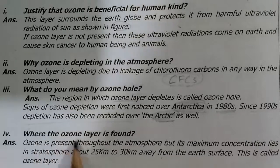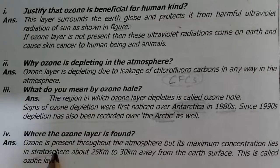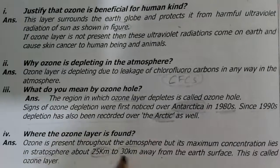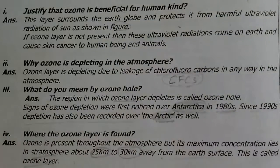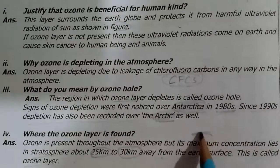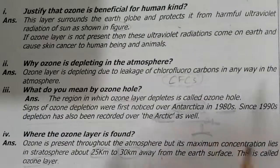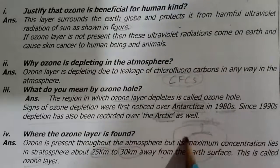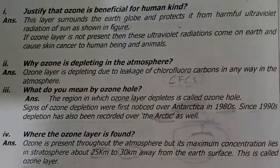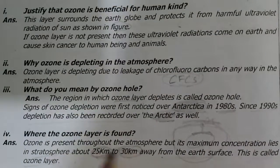Where is the ozone layer found? Ozone layer joh hai, wo kahan milti hai? Ozone is present throughout the atmosphere, but its maximum concentration lies in the stratosphere, about 25 to 30 km away from the earth. This is called the ozone layer. Ozone har jagah par maujud hai, lekin stratosphere ke beech mein 25 km ki doori pe ozone layer ki sabse zyada concentration maujud hai, aur wo earth ko sphere ke form mein surround kar rahi hai. Yeh MCQ aa sakti hai, aap ko notice karna hai.